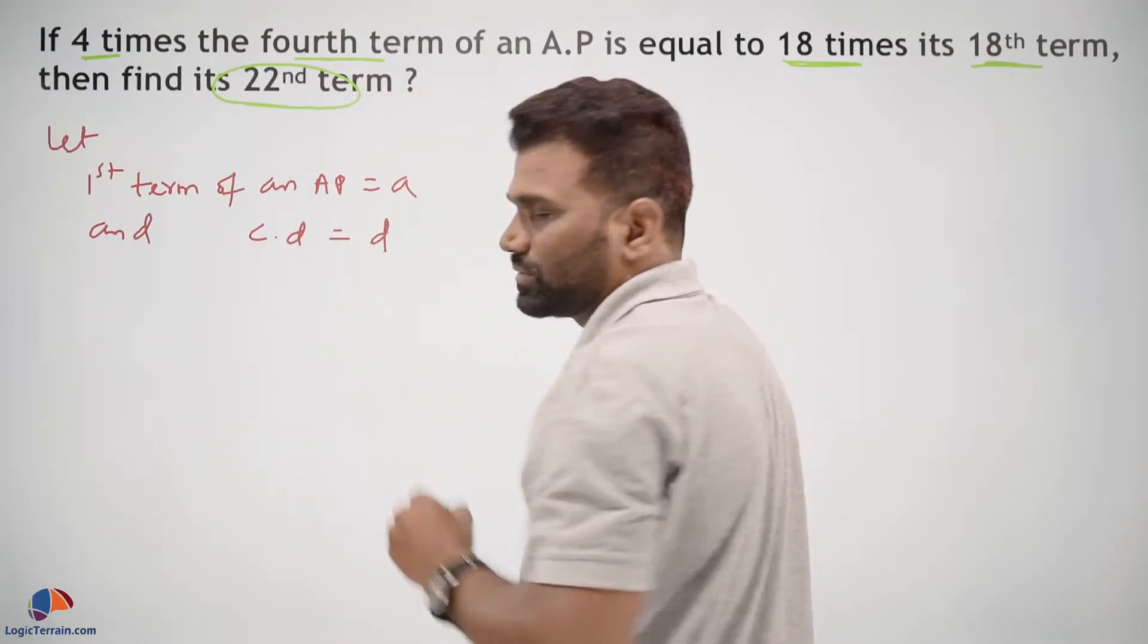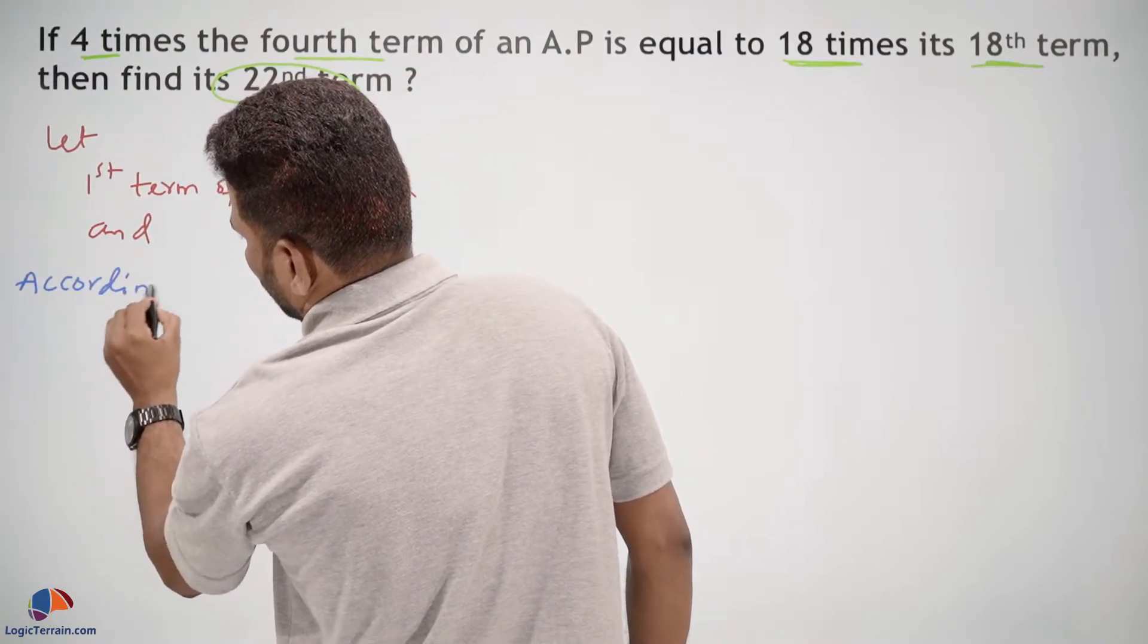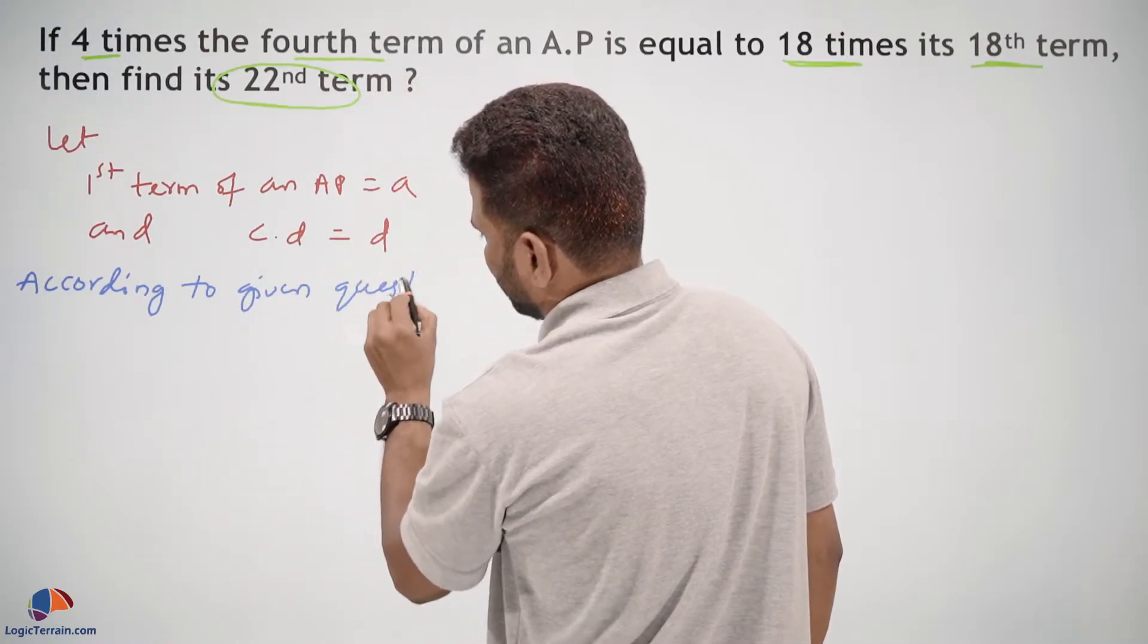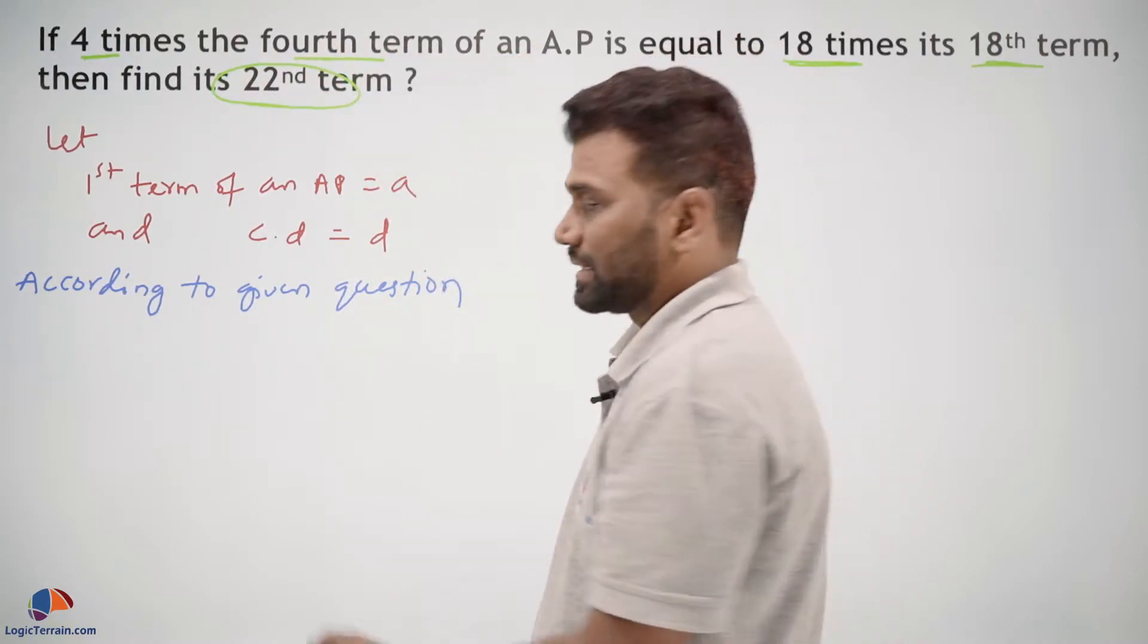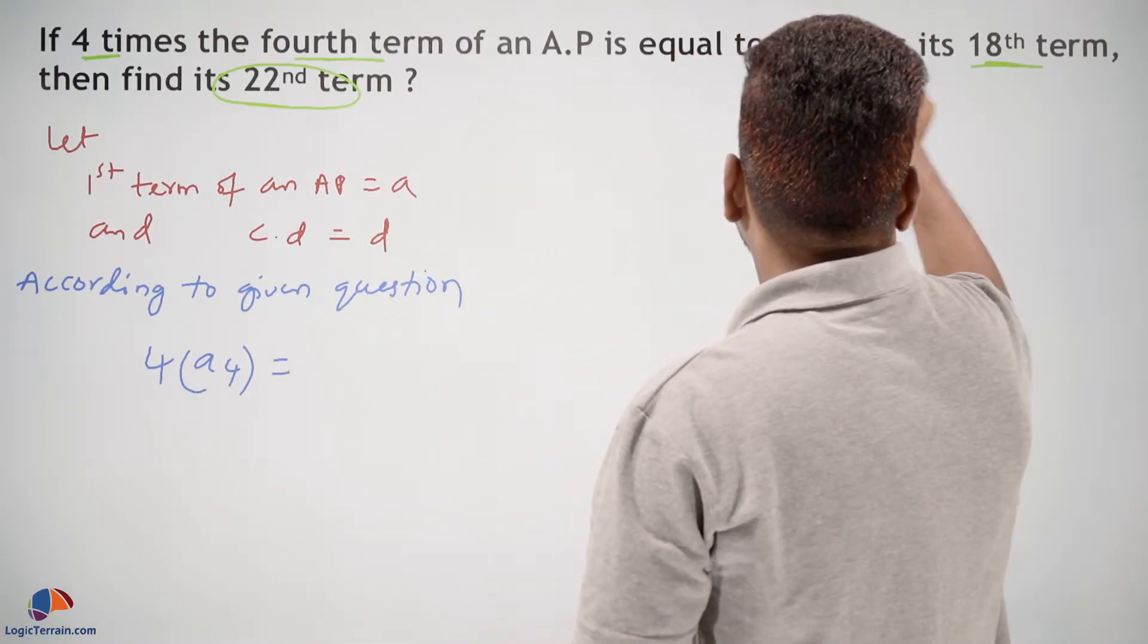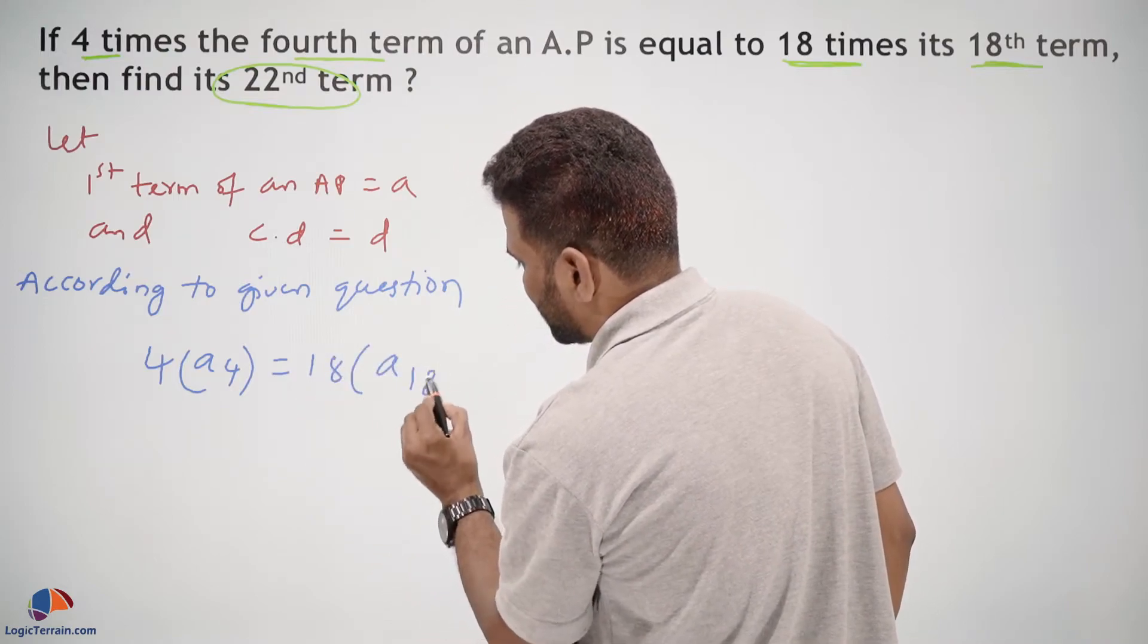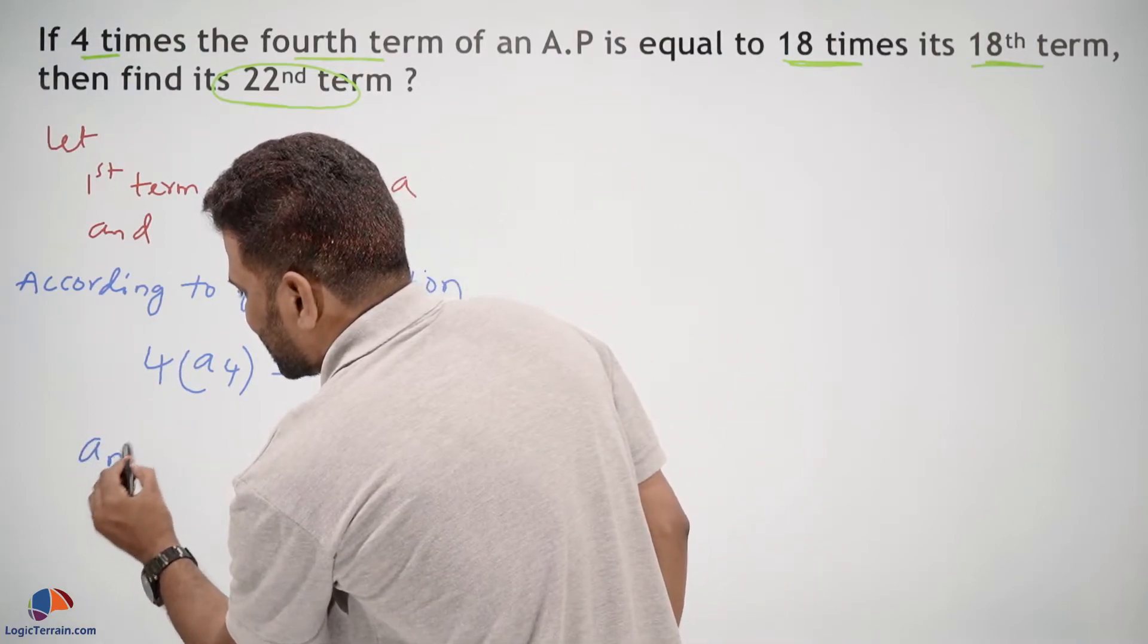According to the given question, 4 times the 4th term, that is 4 into A4, equals 18 times the 18th term, 18 into A18. We know the nth term formula, that is AN equals A plus (N minus 1) into D.